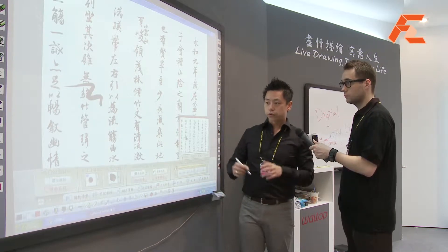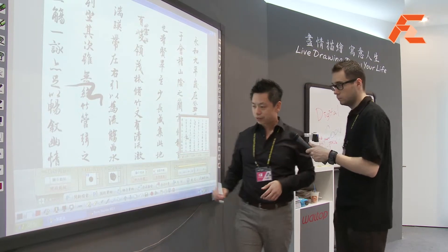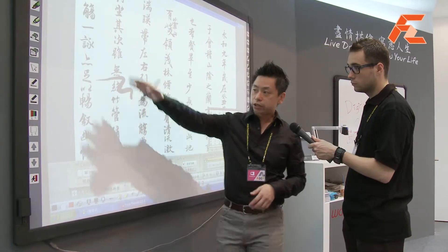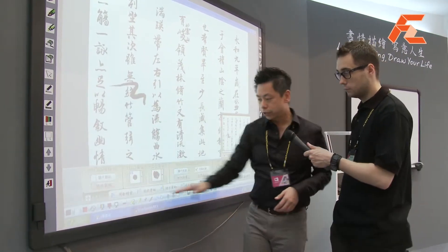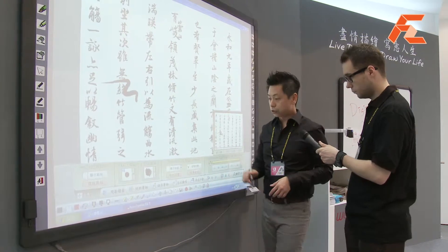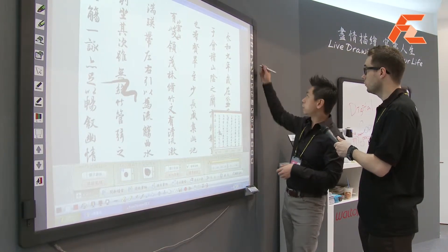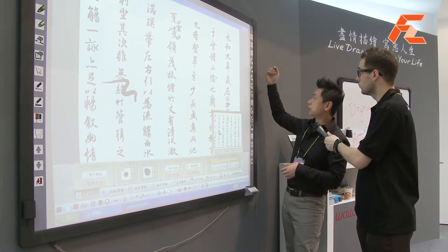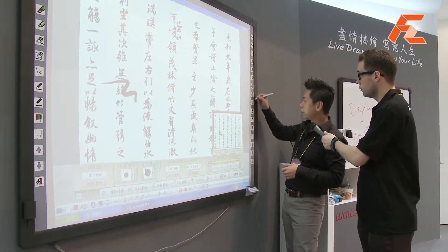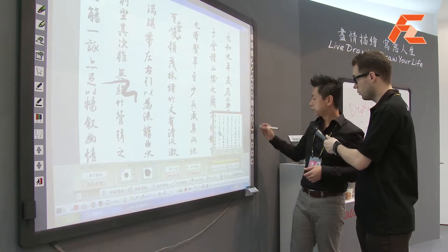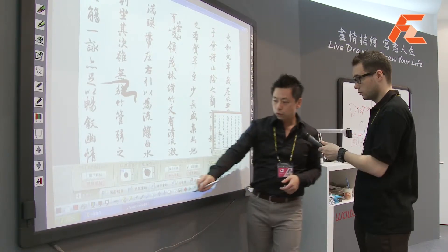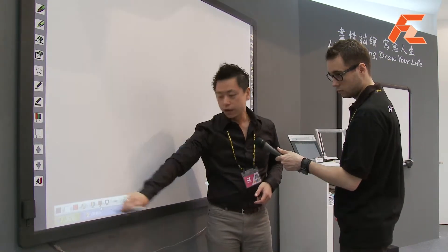So let me show you how to operate. Here is a toolbar and here also has a toolbar as well. So you can decide which one you want to use. For example, I can have a pen or drawing this pen and erase this arrow. And I can have whiteboard or blackboard.